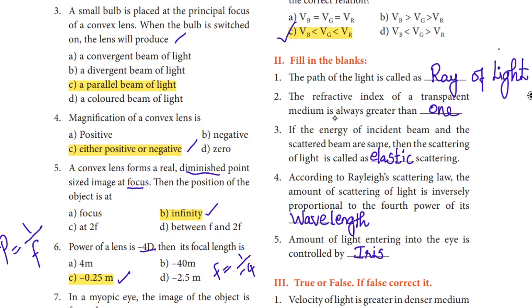Fill in the blanks: If the energy of incident beam and the scattered beam are the same, then scattering of light is called elastic scattering. According to Rayleigh scattering law, the amount of scattering of light is inversely proportional to the 4th power of its wavelength. The amount of light entering into the eye is controlled by the iris.